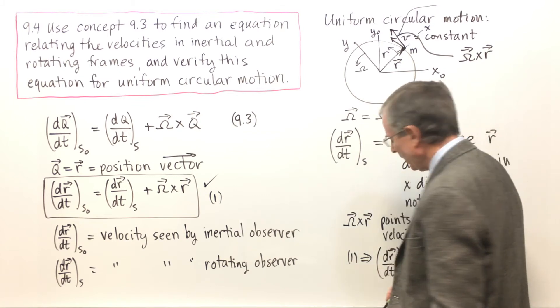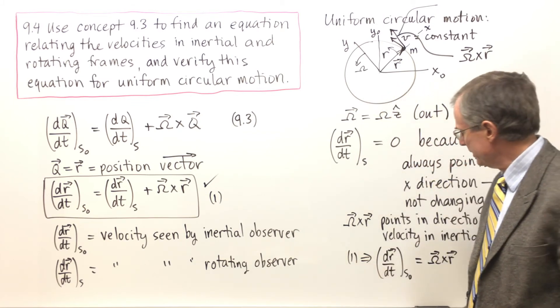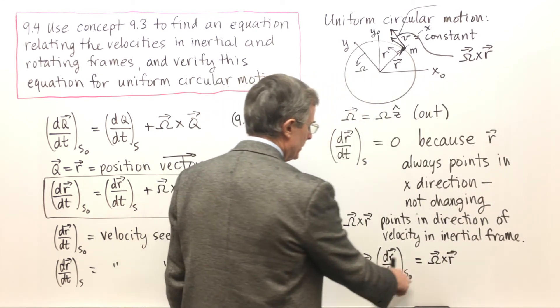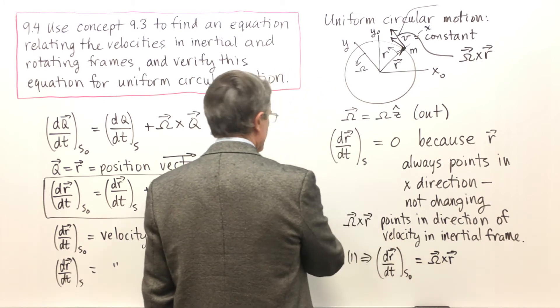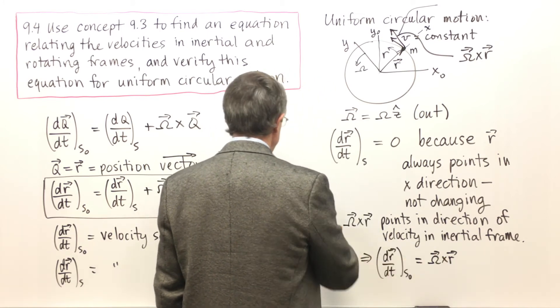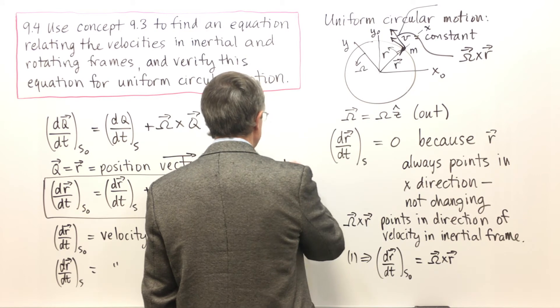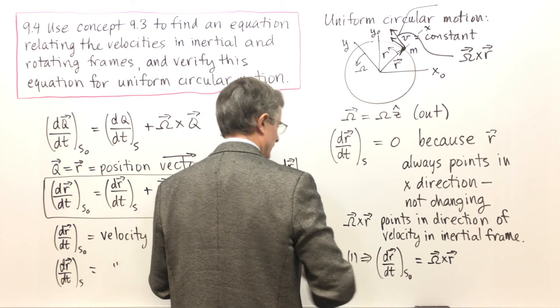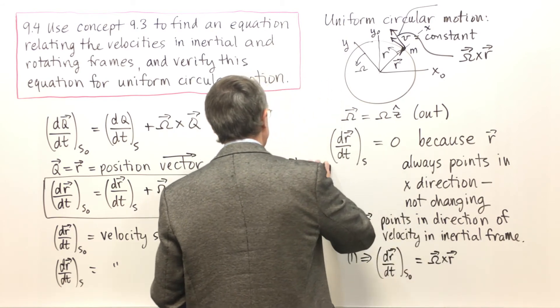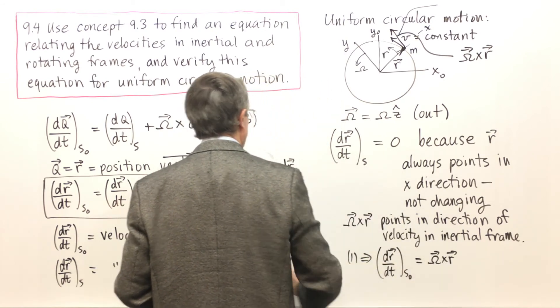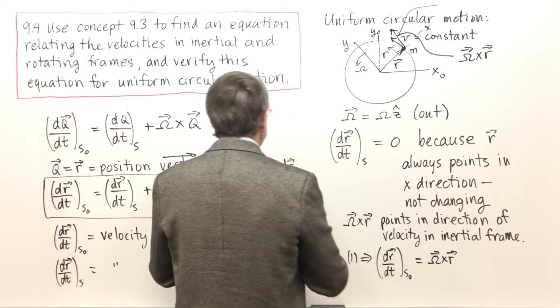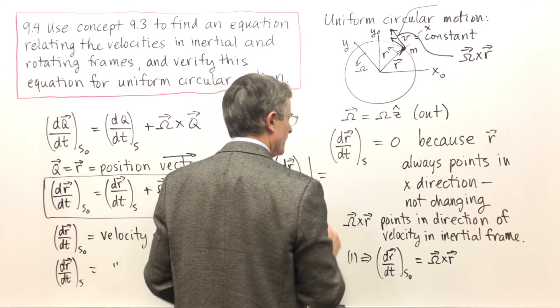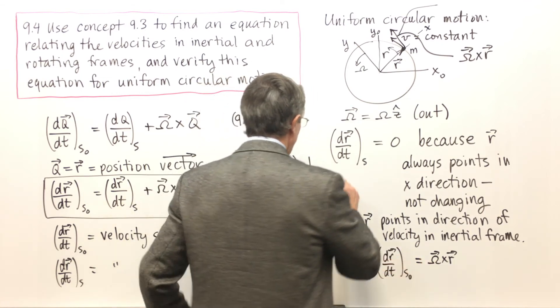You might say that's all well and good but that doesn't look like anything I've ever seen before in my life. To make a full believer out of you, I want to take the magnitude of these vectors. That'll be the magnitude of omega cross R.